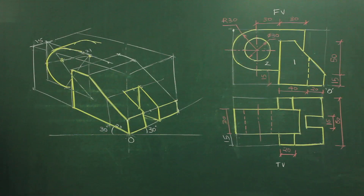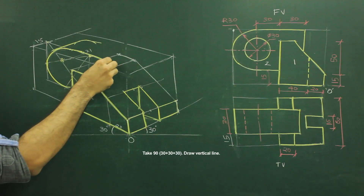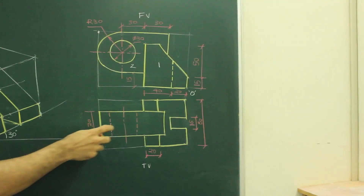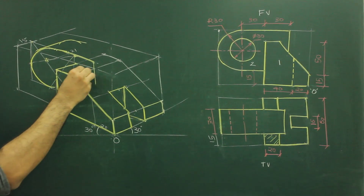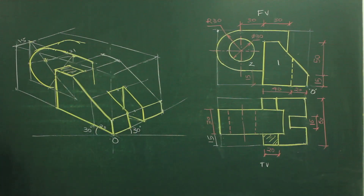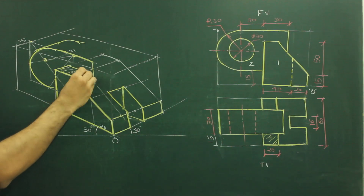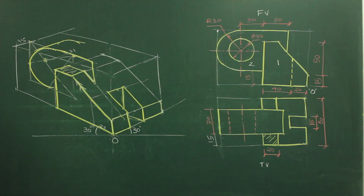We mark 30, then 30 plus 30 = 60, and it will come here. Then from here we mark 30, then 30, then 30. We need to draw a line but don't know the height. For that we check the top view — this part is 15. So from here we go inside by 15, and again from here we go inside by 15, and join this block. We take 15 from here and join, drawing a parallel line to this slope, and wherever it intersects with the line that is the height of the object.